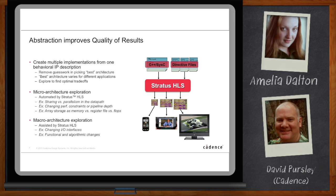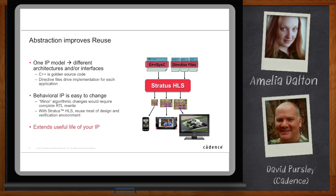By being able to create multiple RTLs, your behavioral IP is much more reusable — retargetable for multiple devices. You could have a high-performance IP and also a low-power IP, all by changing some directive files or TCL scripts to target the tool differently. You can even change the functionality, make a change to your algorithm, and just regenerate the RTL — something that is impossible when trying to reuse RTL IP.